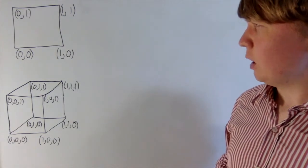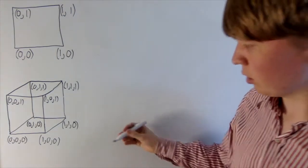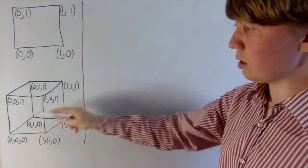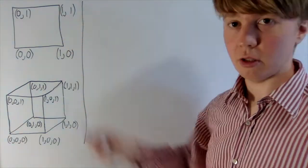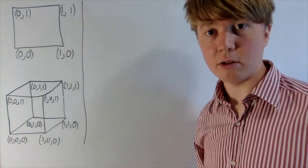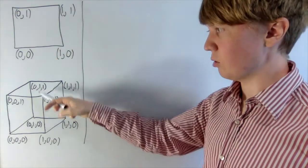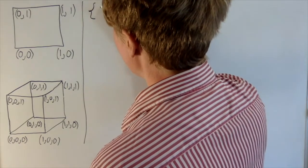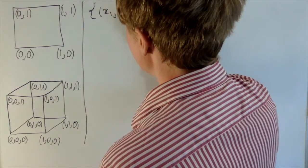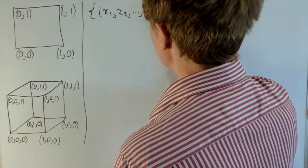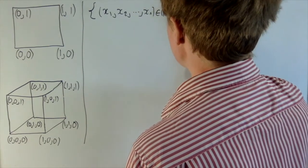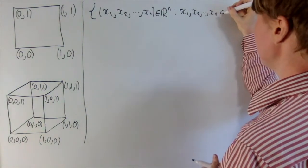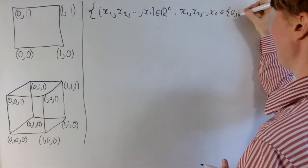So, how do we define an n-dimensional hypercube? We can define one in a very similar way, just using coordinates. You might notice the vertices on a cube or on a square are all your combinations of 0s and 1s that you can fit into 2D or 3D space. We define our n-dimensional unit hypercube as the set of all n-dimensional coordinates in Euclidean space such that each coordinate entry is equal to either 0 or 1.